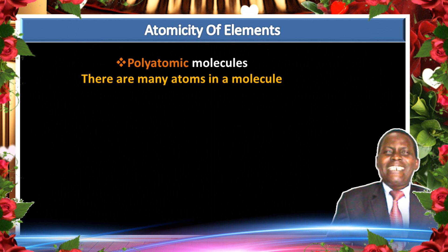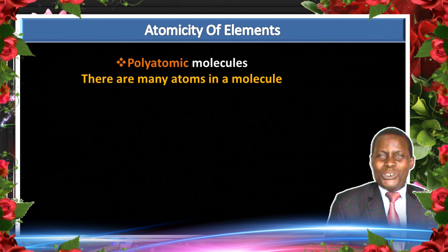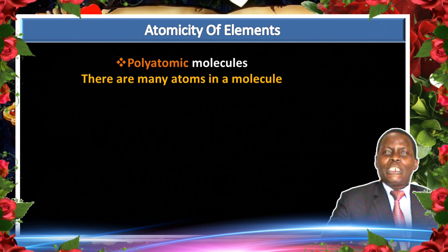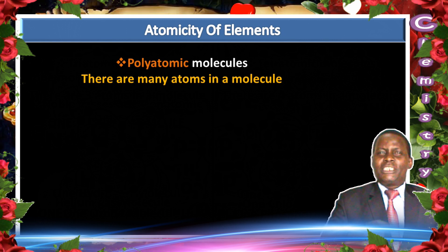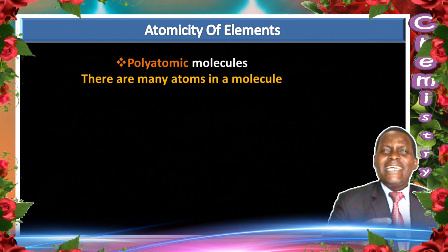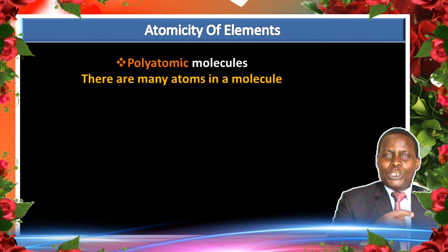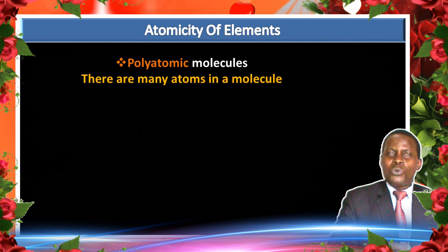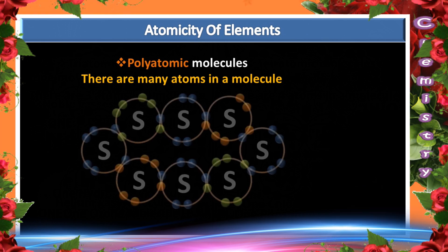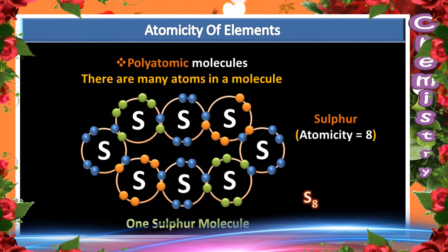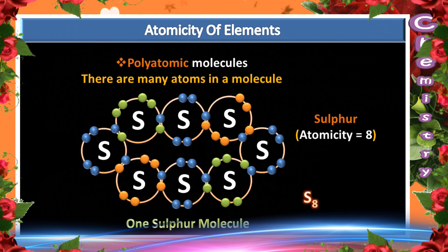A molecule containing many atoms is referred to as polyatomic. An example is sulfur — one molecule of sulfur contains eight atoms of sulfur. Therefore that molecule is referred to as polyatomic.